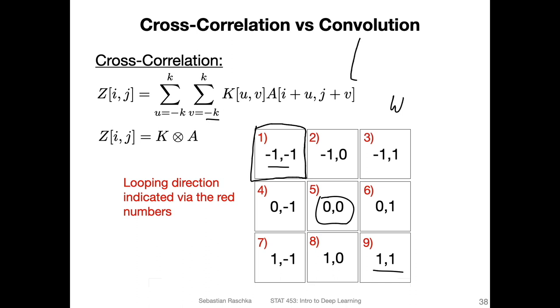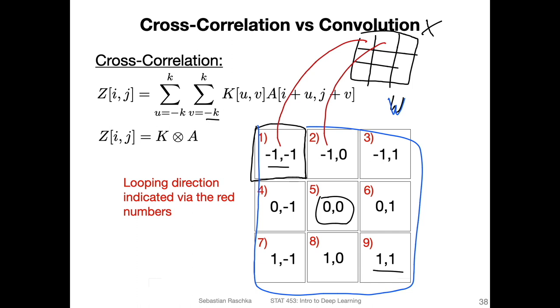We have w and x here, where this whole thing is W. We multiply this one with this one, this one with this one, this one with this one. These indices correspond to the position in the input. That's how we do the cross-correlation. This is essentially how we did that in the previous videos.